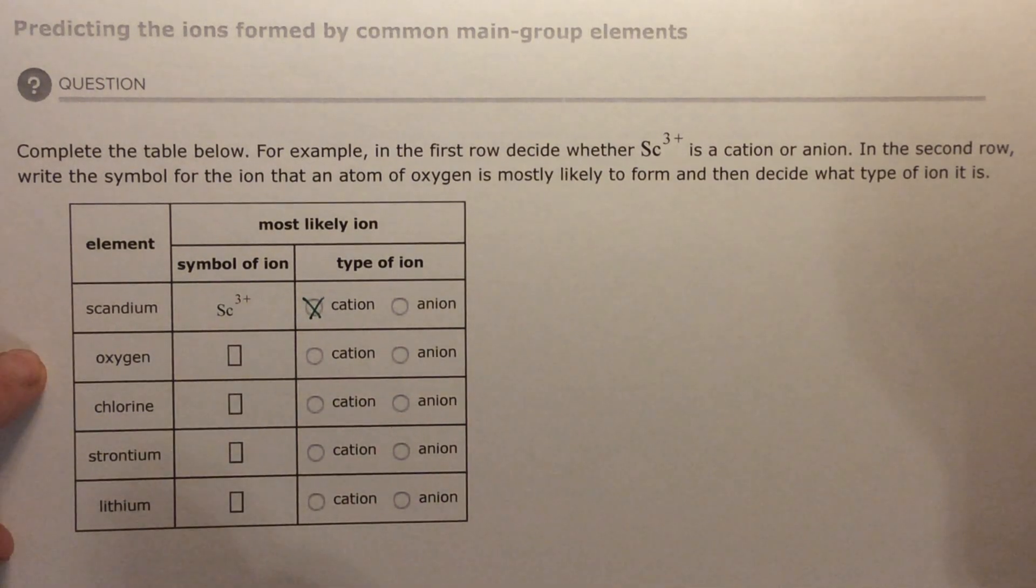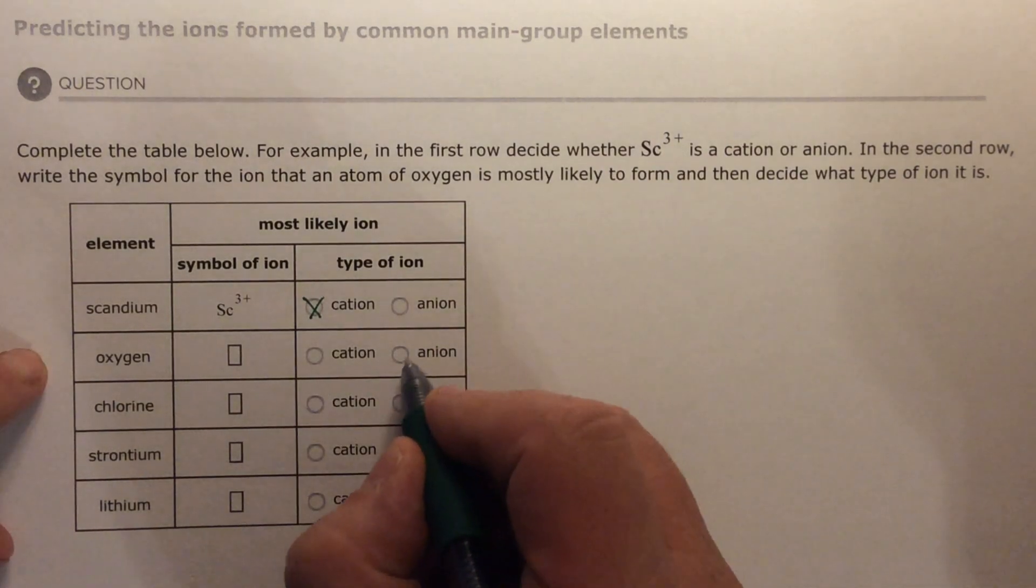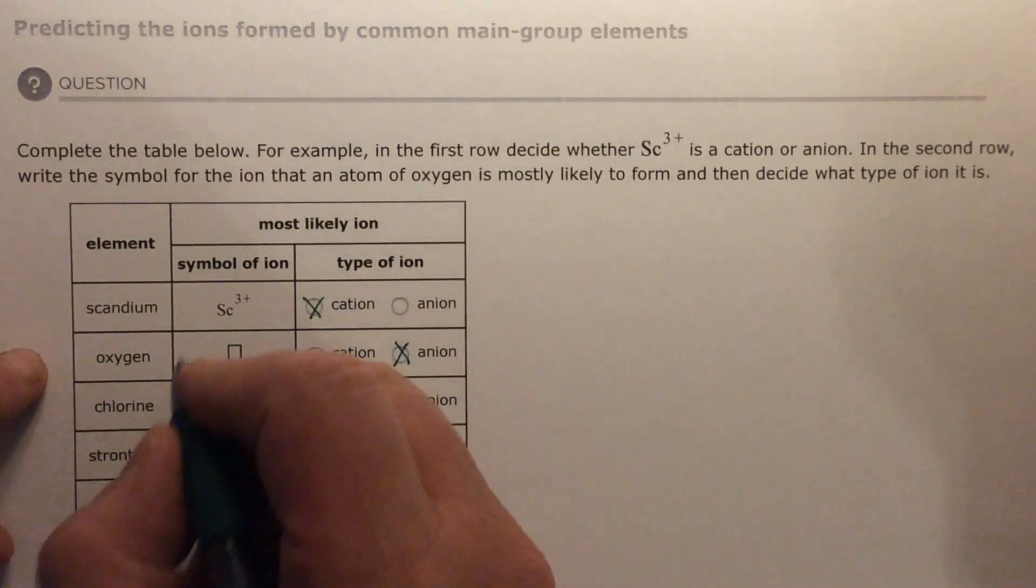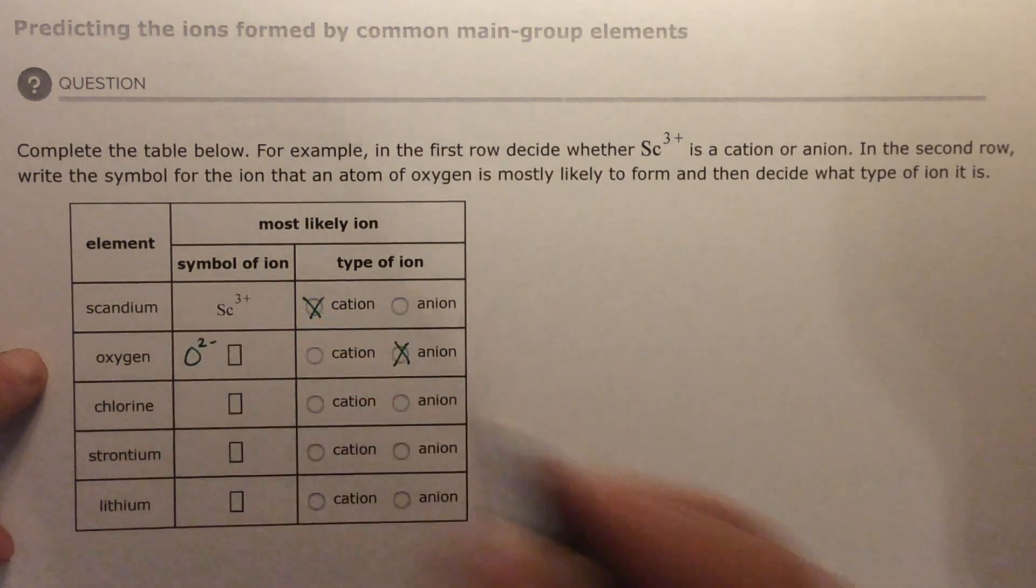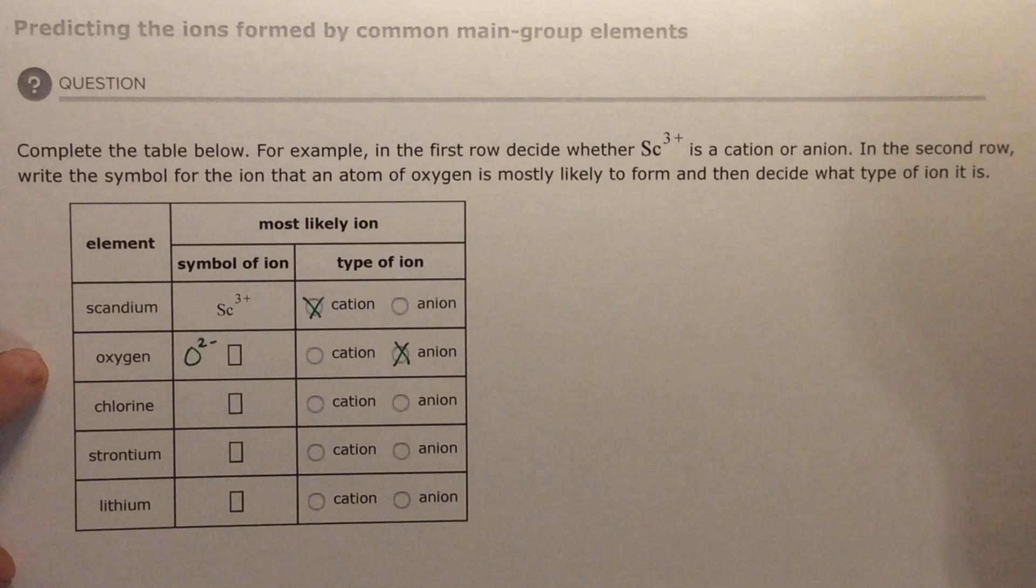What would oxygen be? Look at a periodic table. Oxygen is in group six. It wants to be like group eight. So if it wants to be like neon, which is in group eight, it needs eight in its outer shell. It only has six in its outer shell. It's going to steal two. And if it steals two, it becomes an anion. It's still oxygen, but it's stolen two electrons. So it's going to be O two negative, O²⁻. I hope this is starting to click.